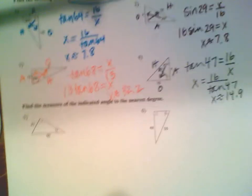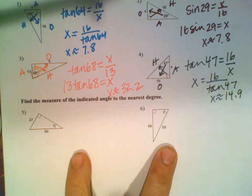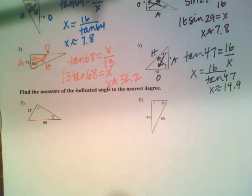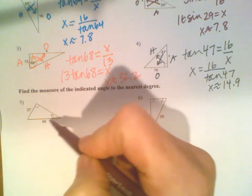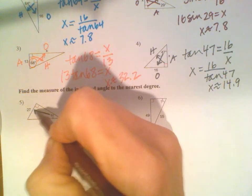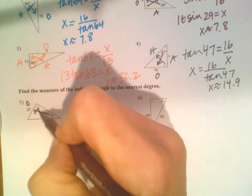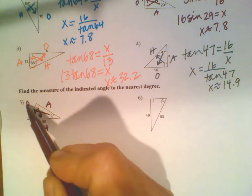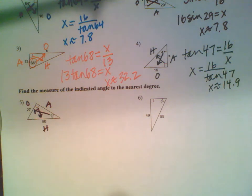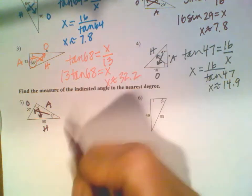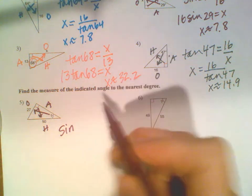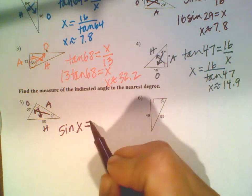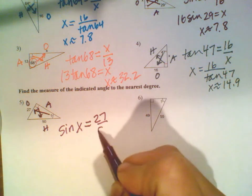That's the new stuff - finding the side. I want to refresh your memory on finding angles, because remember that uses the inverse function. You start the same way. This is the angle I'm interested in. Across from there is my opposite, across from the right is the hypotenuse, the remaining side is adjacent. This one is opposite and hypotenuse, so I'm using sine. Sine of the angle equals the opposite over the hypotenuse.